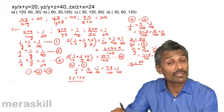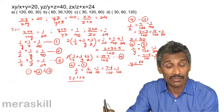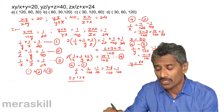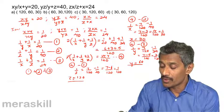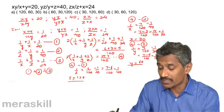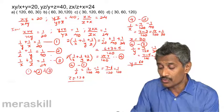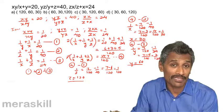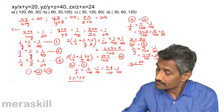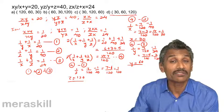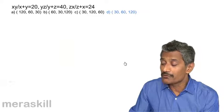This is how we solve these equations. First we invert the ratios and convert them into equations in 1/x, 1/y, 1/z. We add all three to get the value of 1/x + 1/y + 1/z, then eliminate variables by subtracting pairs of equations, obtaining one variable at a time. Our answer is 30, 60, 120.